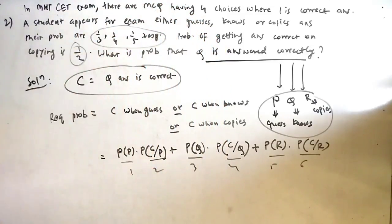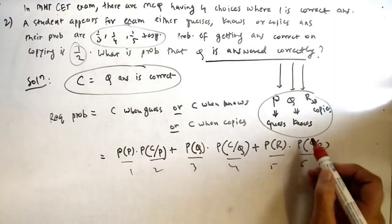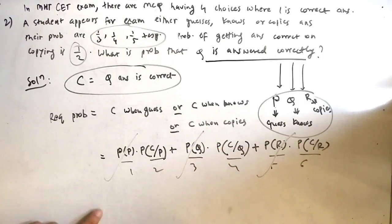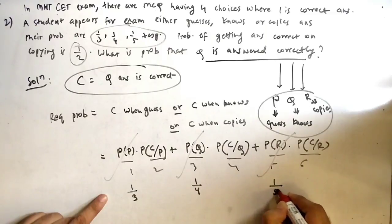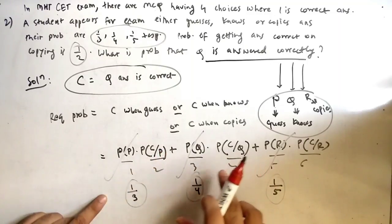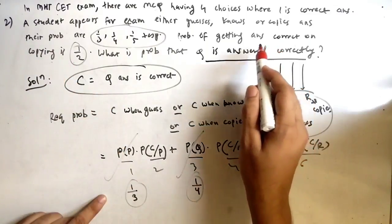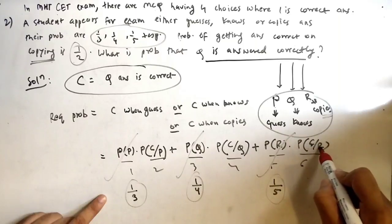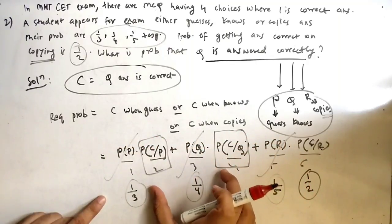From the question, P(P) = 1/3, P(Q) = 1/4, P(R) = 1/5 are already given. Also, P(C|R) = 1/2 is given — probability of correct answer when he copies. So we have terms 1, 2, 4, and 6. The remaining two — P(C|P) and P(C|Q) — are the important ones we need to find using logic.